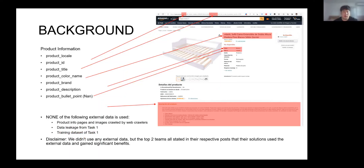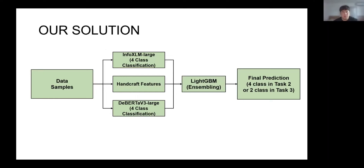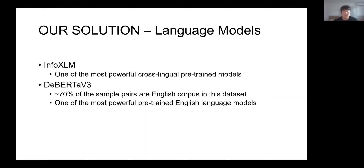The product information includes locale, ID, title, color, brand, description, and bullet points. We only used the Task 2 training dataset in our solution. In our solution, we use two language models assembled by LightGBM: InfoXLM and DeBERTa-V3. There is a large difference between InfoXLM and DeBERTa-V3, which is good for fusion.